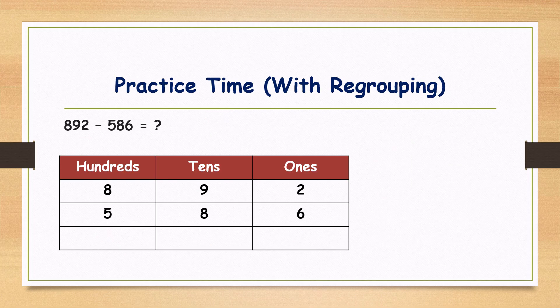Next, practice time with regrouping. The numbers are eight hundred and ninety-two minus five hundred and eighty-six. We arranged already in the table. I am giving thirty seconds. Time starts now.